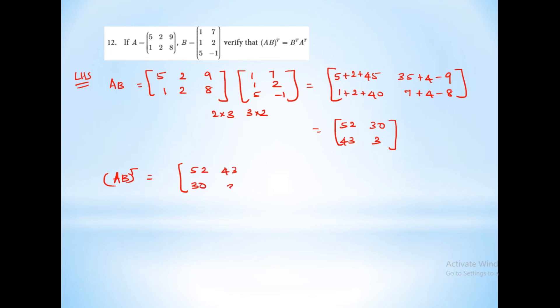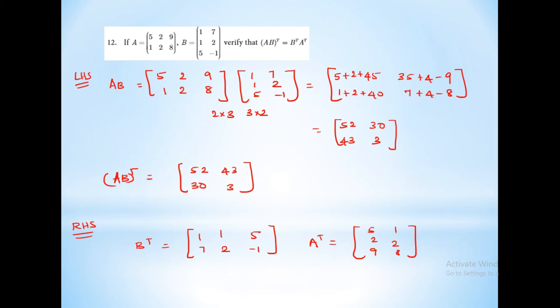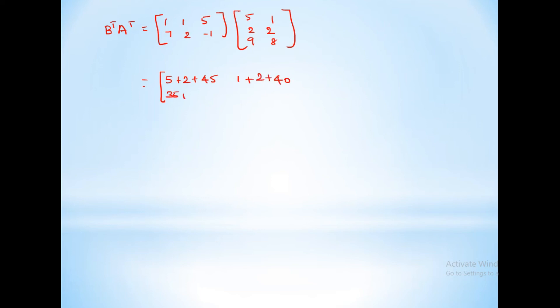(AB) transpose equals 52, 43, 30, 3. For the right-hand side, B transpose equals 1, 7, 1, 2, 5, minus 1 transposed, and A transpose equals 5, 2, 9, 1, 2, 8 transposed. Computing B transpose times A transpose: first row, first column: 5 plus 2 plus 2 equals... 52. Second element: 43. Third: 30. Fourth: 3. Which equals 52, 43, 30, 3. Hence proved.